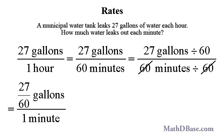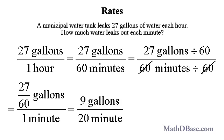So we have 27 over 60 gallons in the numerator, and the 60s cancel in the denominator, giving us 1 minute. We can reduce the numerator to 9 over 20 gallons, dividing both terms by 3.